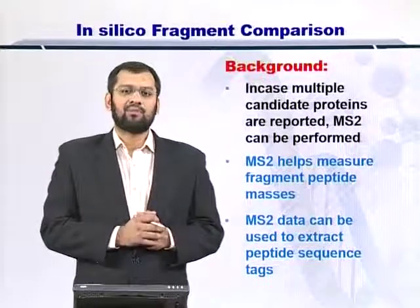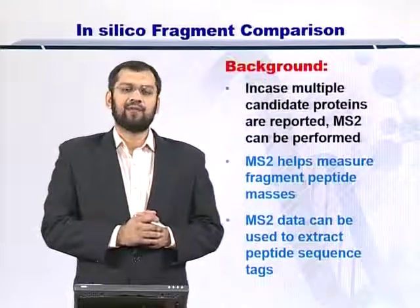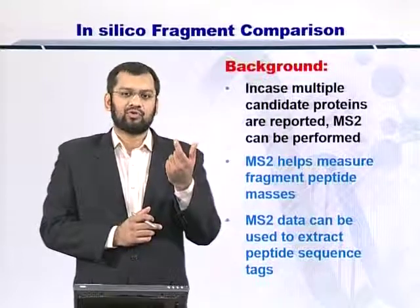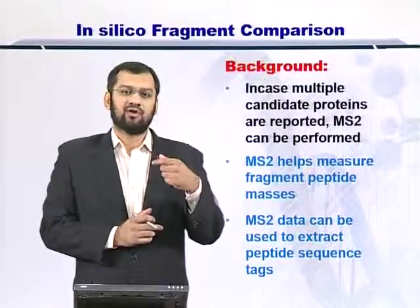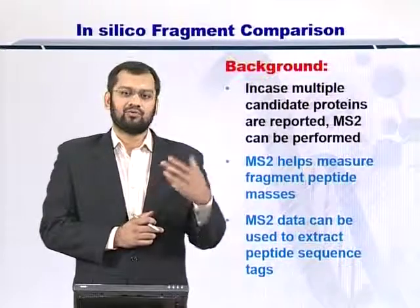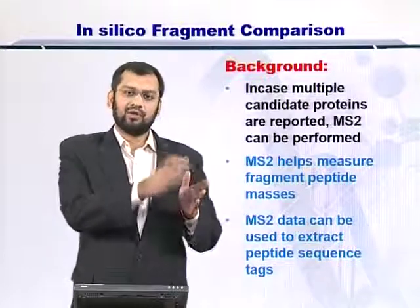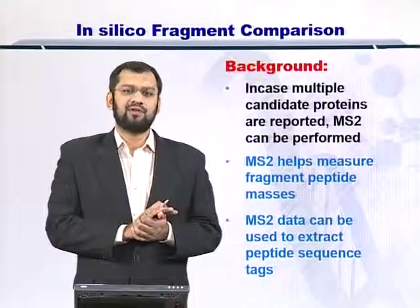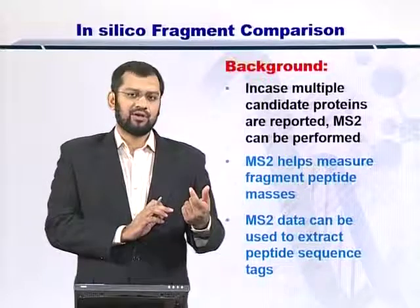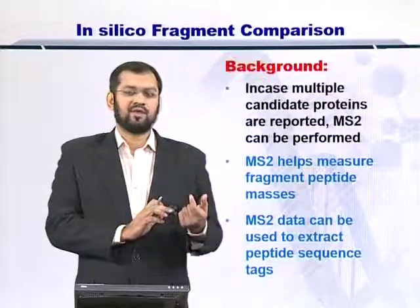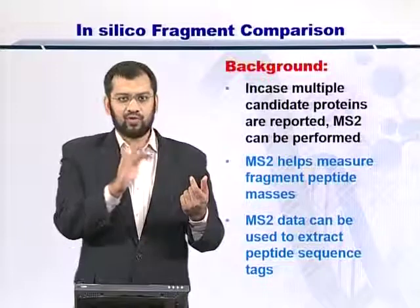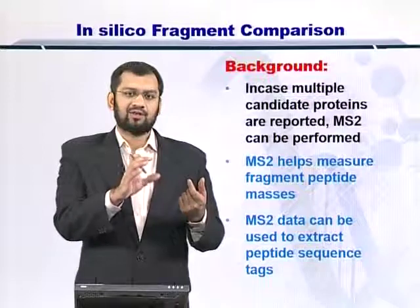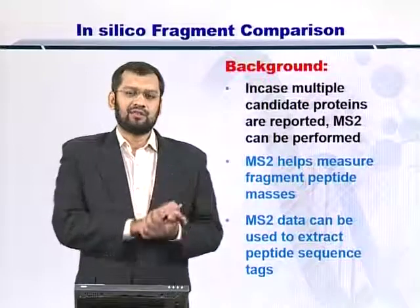We call them the peptide sequence tags (PST), and peptide sequence tags are small subsets of protein sequences, maybe 3 amino acids long, or 4, or 5 depending upon the PST. Then you compare them with the proteins in the database. Each PST reported in the experiment is compared with the sequence of all the proteins in the protein database, and the proteins that contain this PST are then selected.